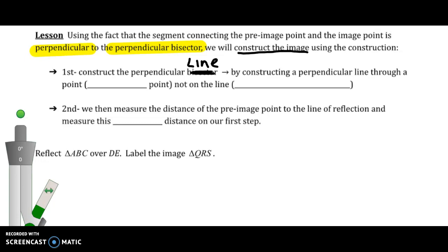So we're going to construct a perpendicular line, so please fix that on your notes, by constructing a perpendicular line through a point, which is the pre-image point, not on the line, which is the line of reflection. So notice that those constructions that we did in Unit 1 are coming back around. We need to be able to use them. Then we're going to measure the distance of the pre-image point to the line of reflection and measure this same distance on our line we made in our first step. That's copying a segment. So let's apply this.